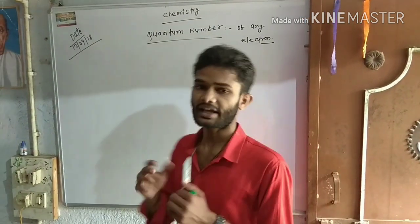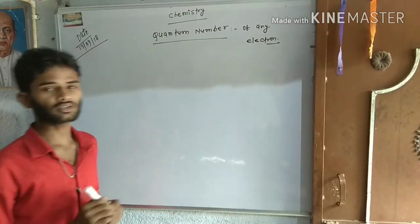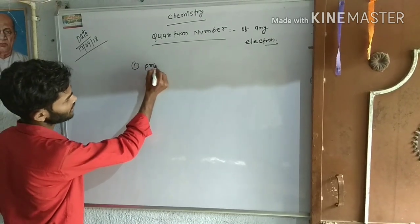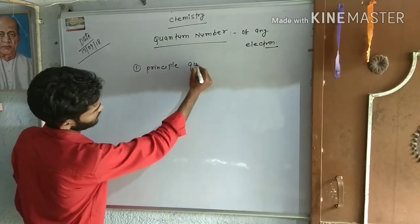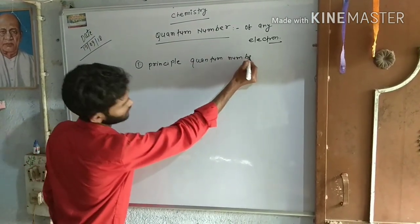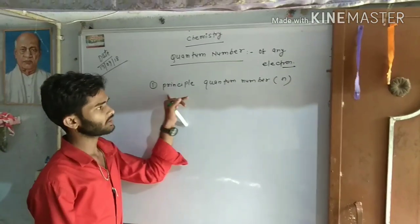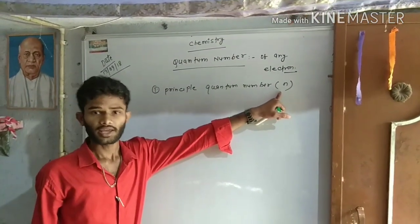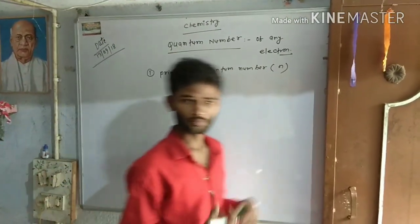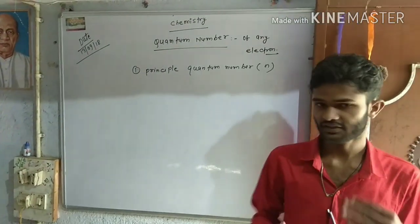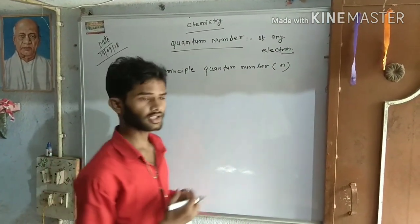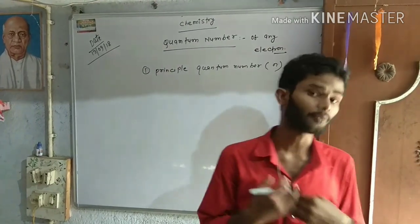तो सबसे पहला quantum number का नाम है principal quantum number, जिसको denote करते हैं small n से। अब इसके बारे discuss करेंगे कि principal quantum number से क्या मिलता है। तो principal quantum number बताता है orbit के बारे, number of orbit के बारे।